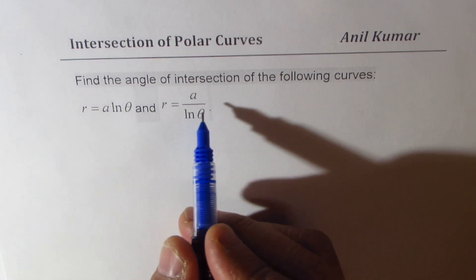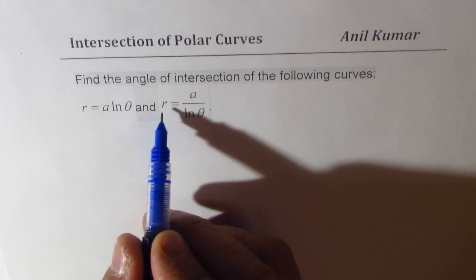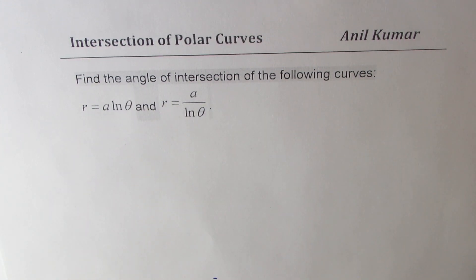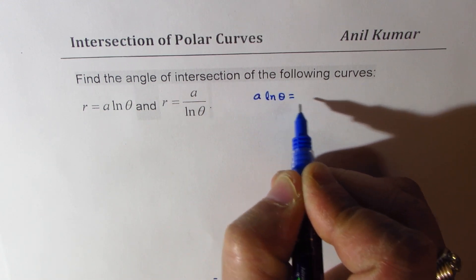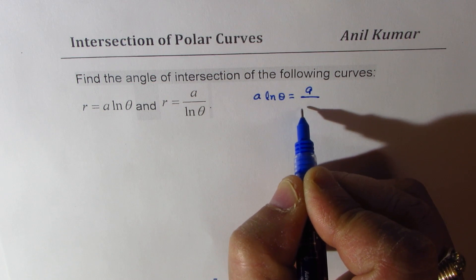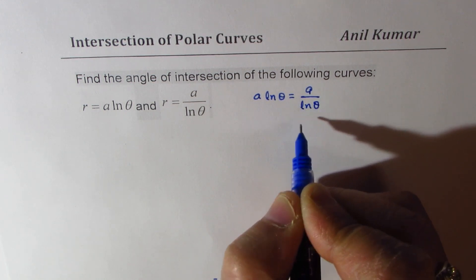Now these curves will intersect at a point. At that point both these values will be same, so we could equate a into ln theta equals to a over ln theta.